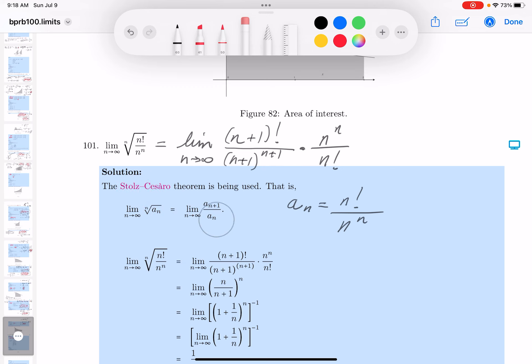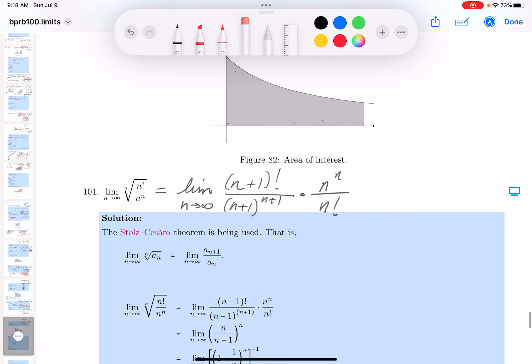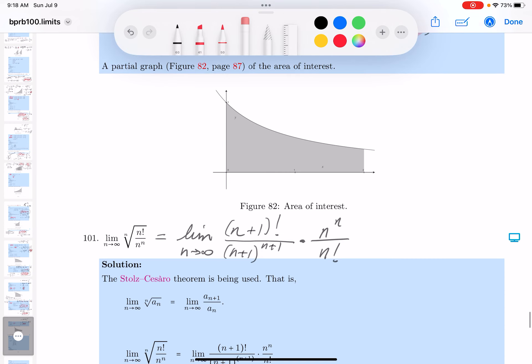I'm going to get my eraser out. And I'm going to try to simplify that. And I'll do it on the side. And what do I see over there? I see N plus 1 factorial, which is N plus 1 times N factorial. And on bottom, you're going to see N plus 1 times N plus 1 to the N, times N to the N over N factorial.